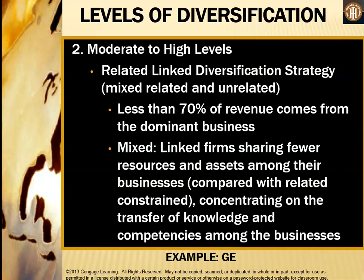Still at moderate to high levels, the related linked diversification strategy can be a mix of related and unrelated. Less than 70% of revenue comes from the dominant business. This mixed strategy means linked firms share fewer resources and assets among their businesses compared to related constrained, concentrating instead on the transfer of knowledge and competencies among businesses. General Electric, discussed at the start of the lecture, is an example of this.